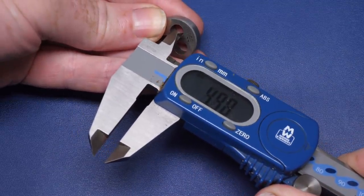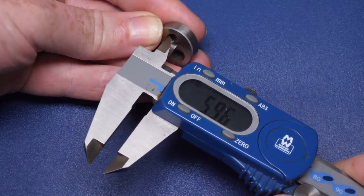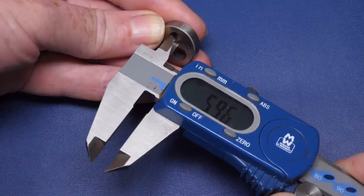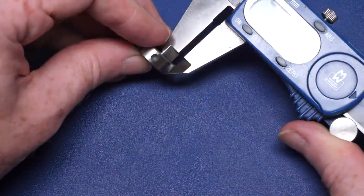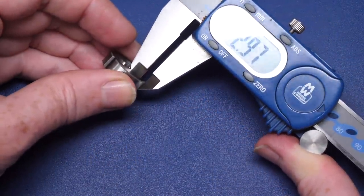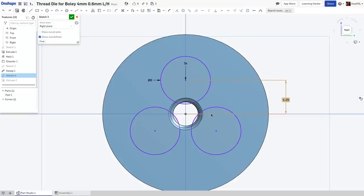This M4 die has three 6mm holes in, with their centres 4.25mm from the dead centre of the die. I based my own design on the same dimensions and modelled it up in Onshape to make sure the geometry looked sane. Check the link in the description for access to my Onshape model.